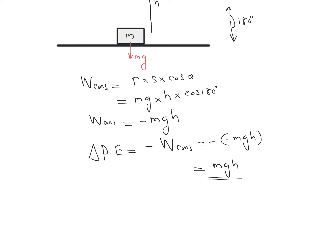If we consider the initial potential energy to be 0 — taking the initial position as the zero reference — then the gravitational potential energy of the object when it is at a height h above the zero reference line is mgh. We use this equation for the calculation of gravitational potential energy with respect to a zero reference line, or the change in potential energy when an object is displaced by a height h in the upward direction.